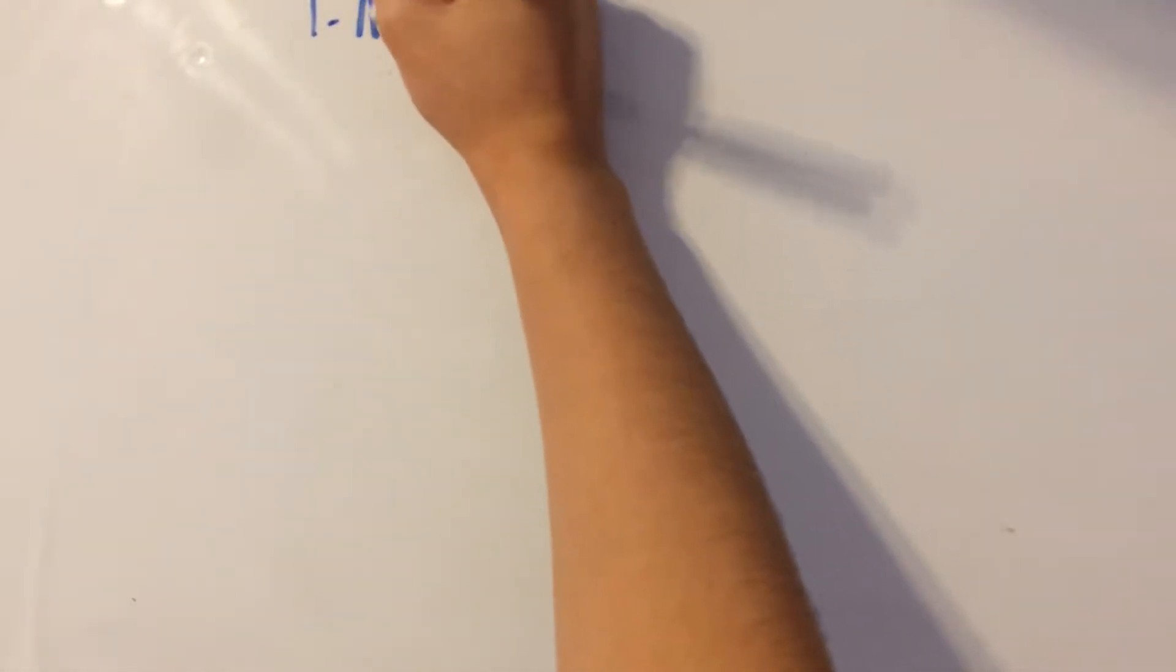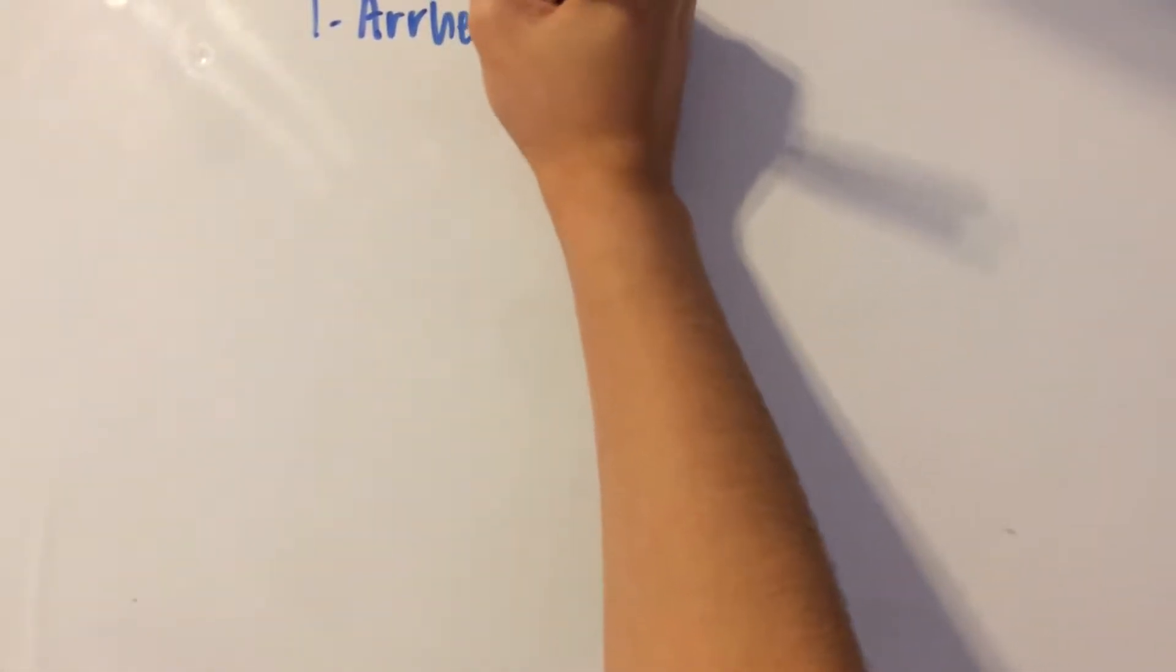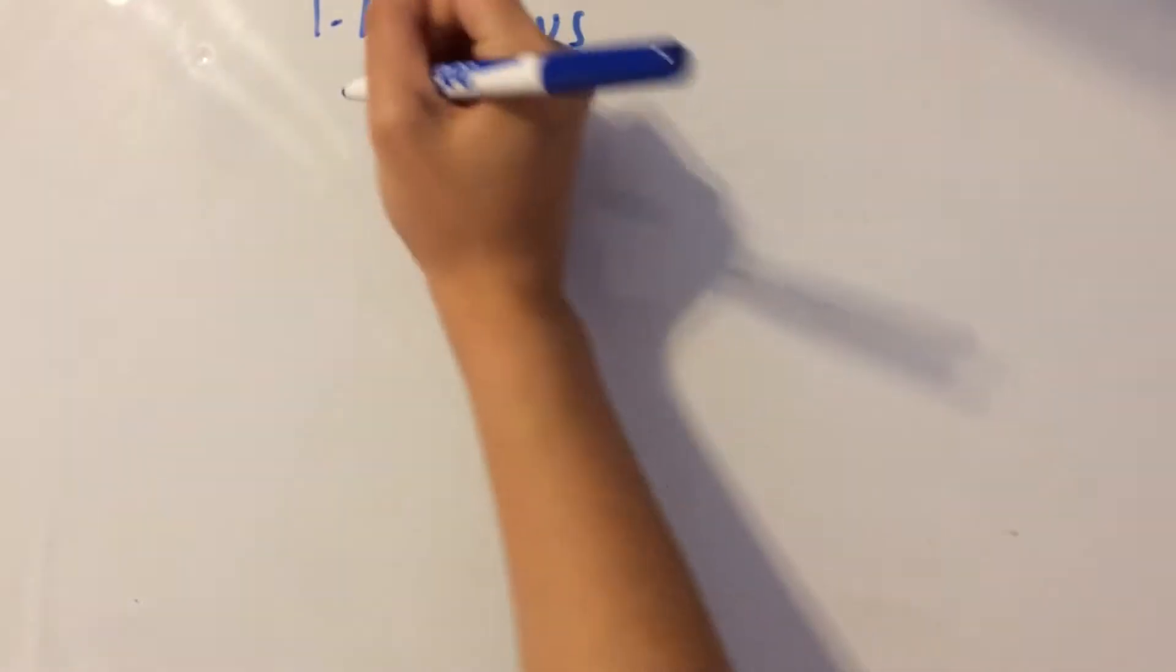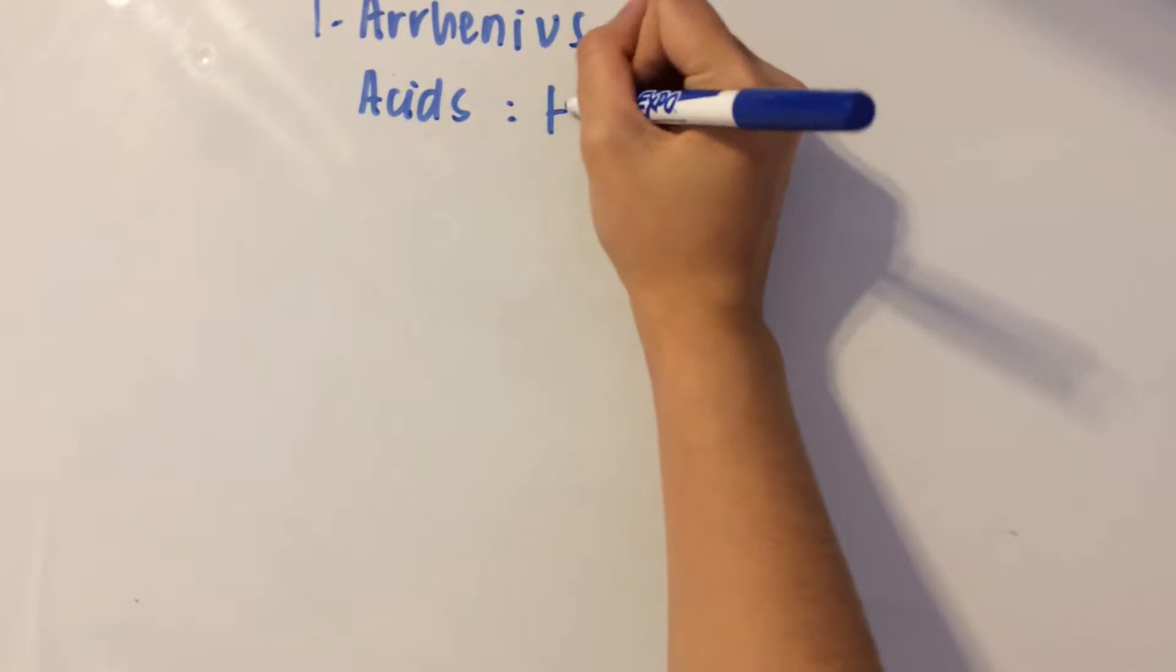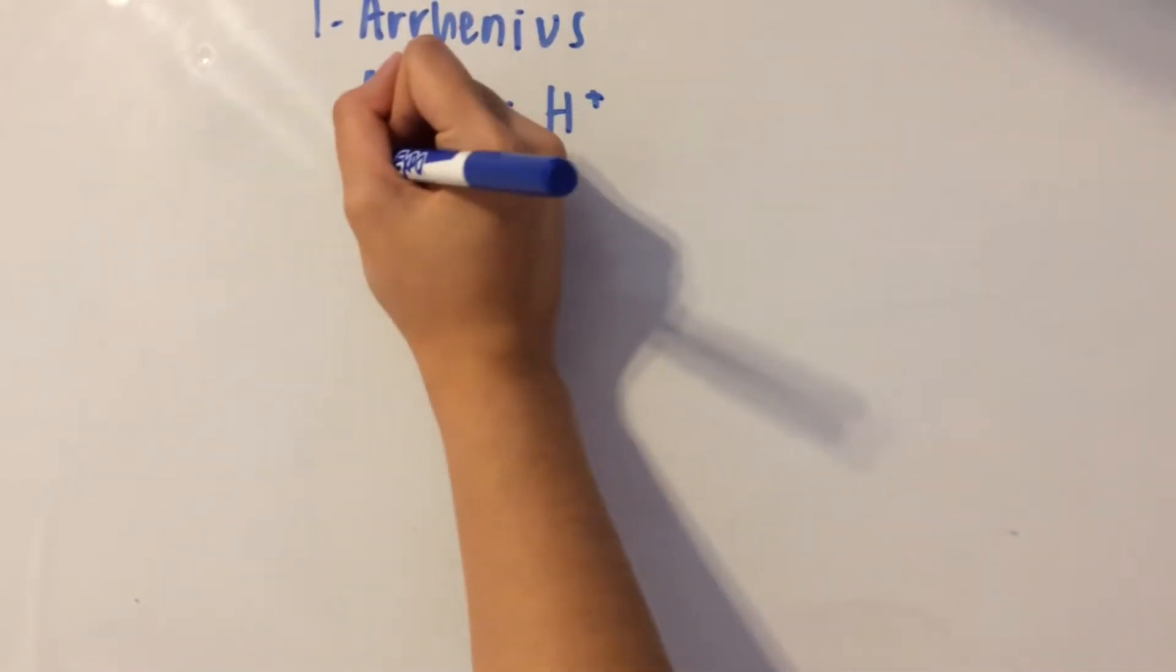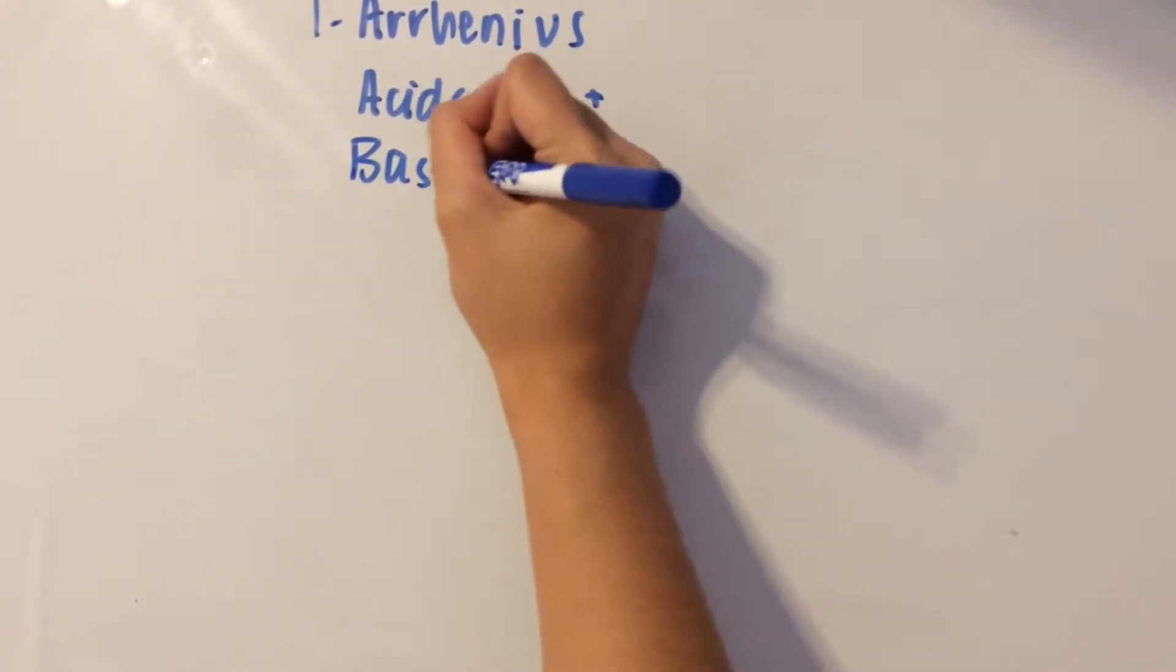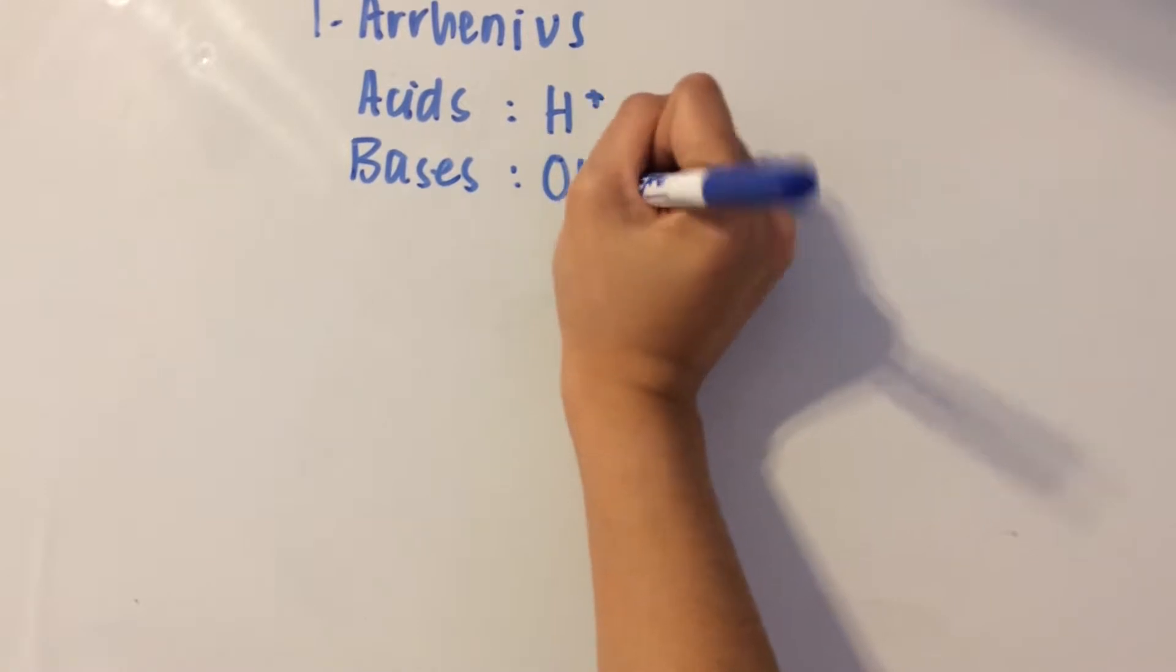The definitions for acids and bases have actually changed over the years and it all started with a guy named Arrhenius. Arrhenius said that acids add H plus into the solution while bases add OH minus into the solution.